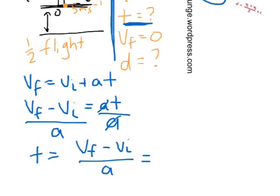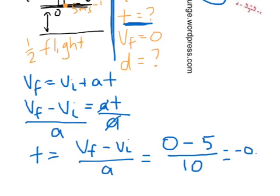Now we can substitute our numbers in. The final velocity is 0 minus 5 divided by the acceleration. So you can see there's a change in velocity over the acceleration. This is our acceleration formula rearranged. And the acceleration was 10 meters per second squared. So that gives us a time from the initial point to the top of negative 0.5 seconds. What does that negative mean?